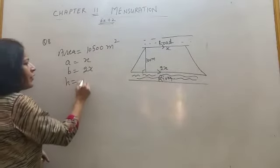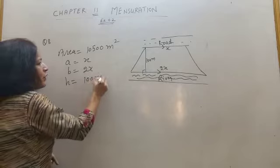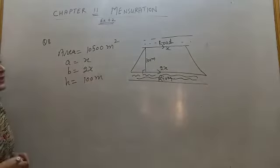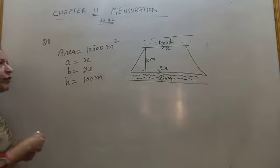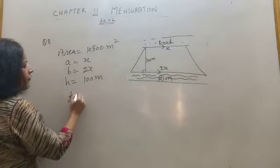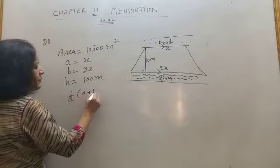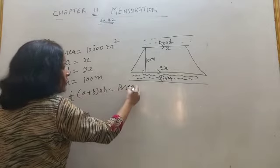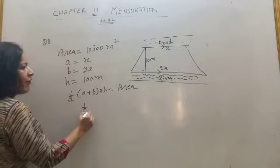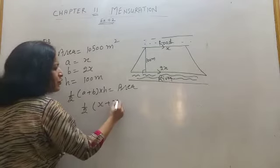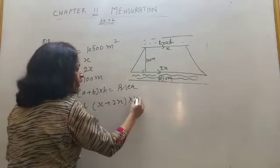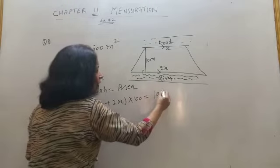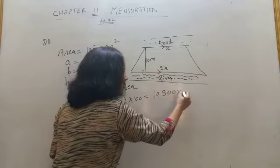Also, perpendicular distance between two sides is 100 meter. So put in the formula. Half of A plus B into h equals area. So half of x plus 2x into 100 equals 10,500 meter square.